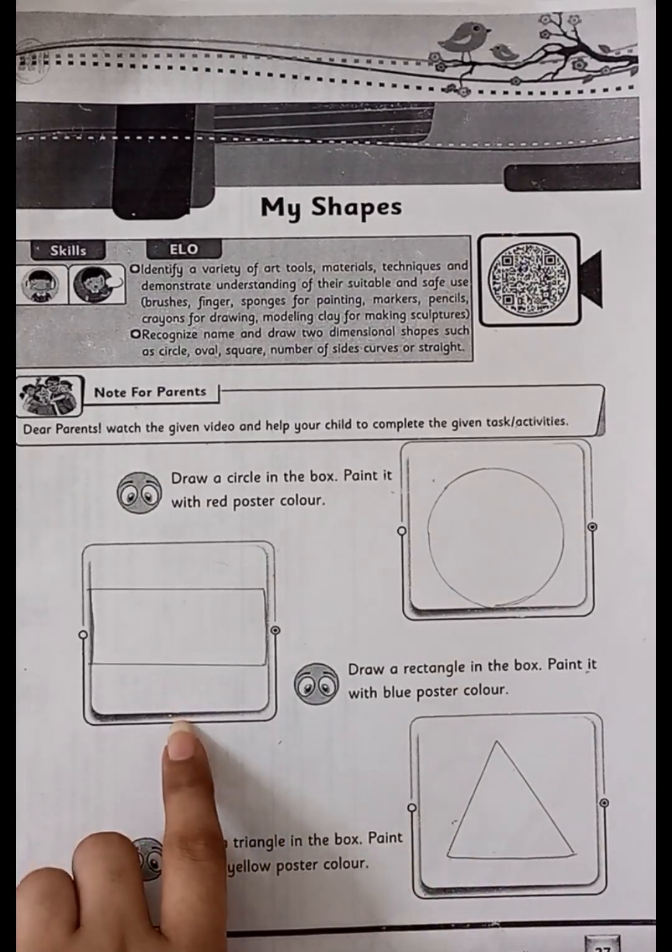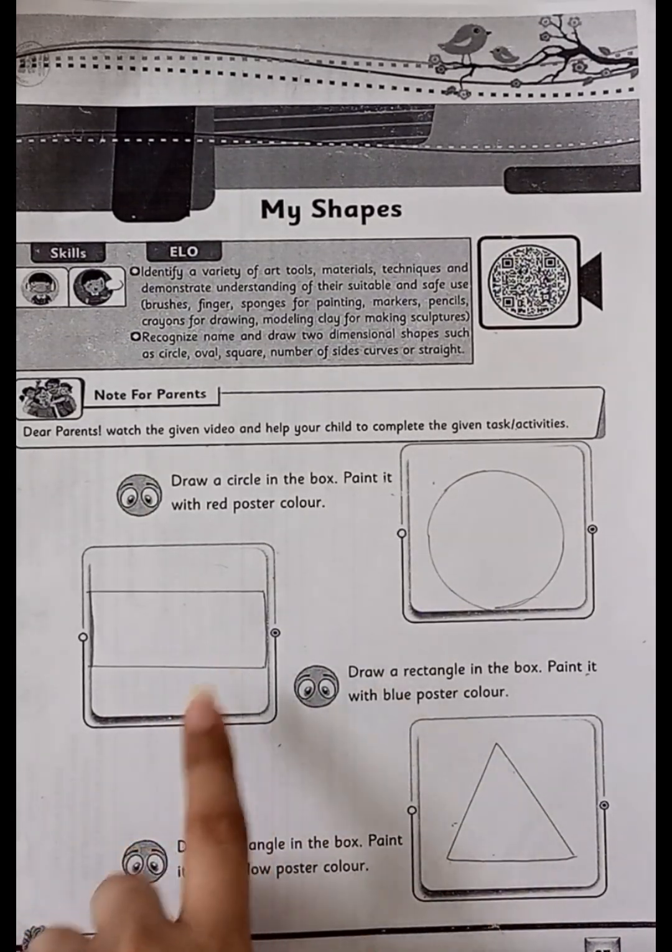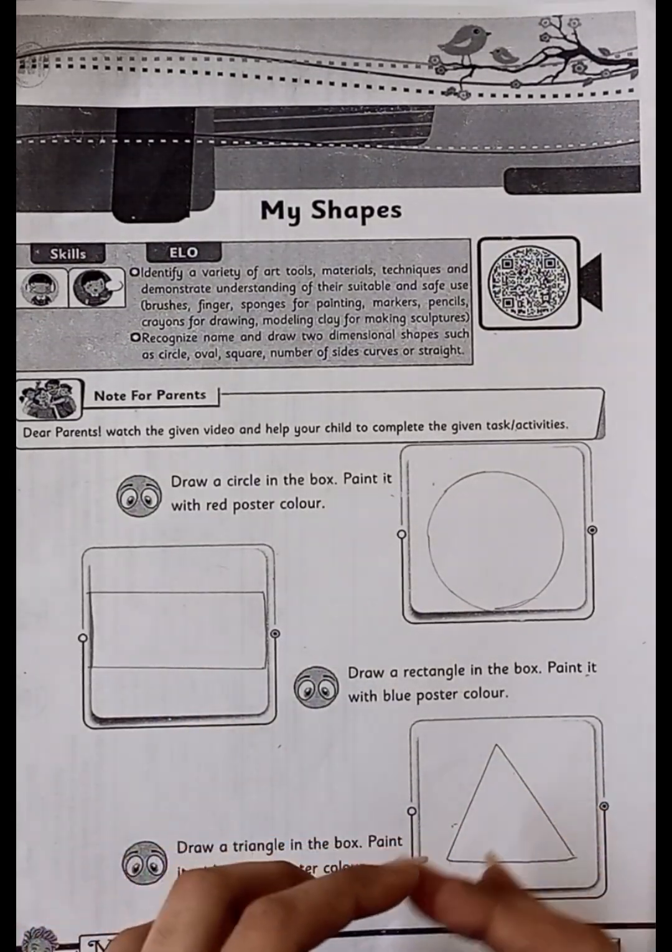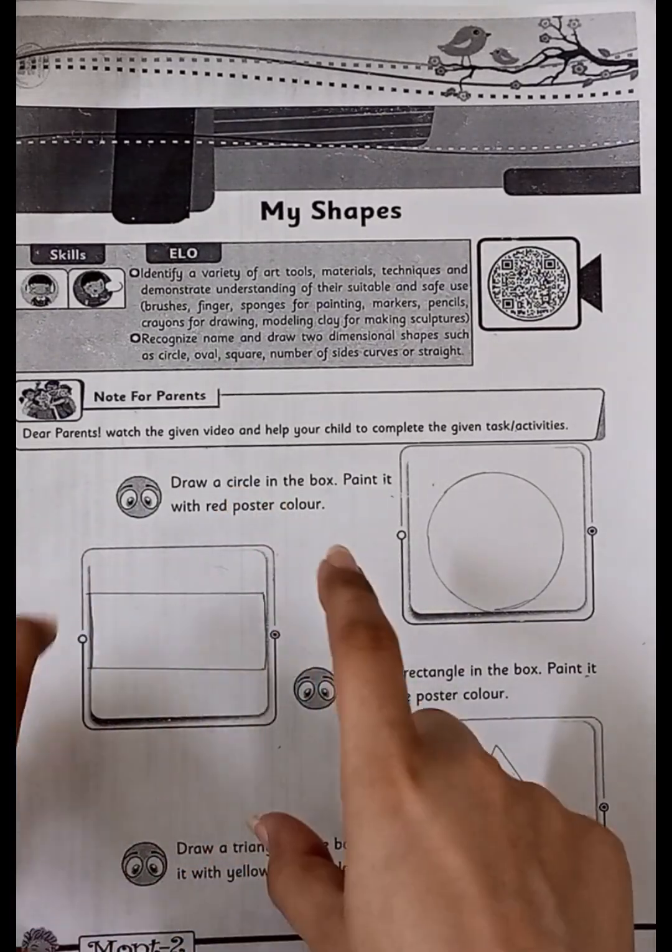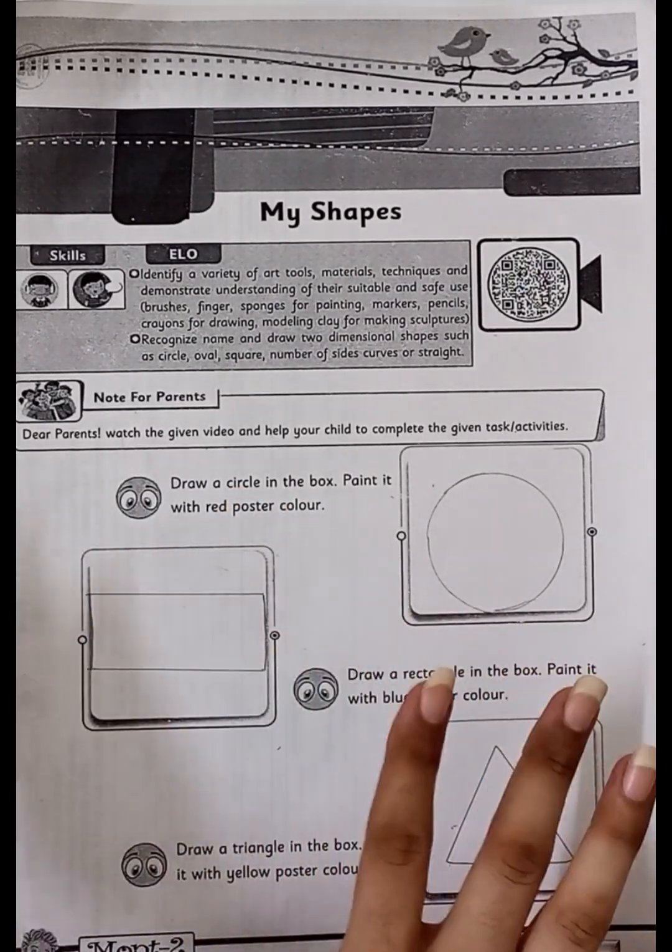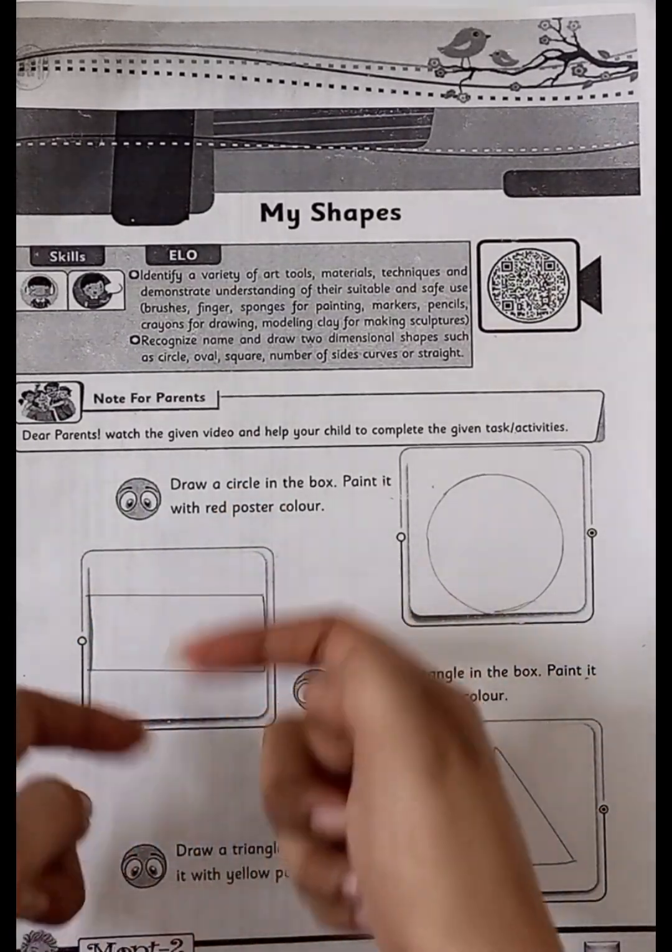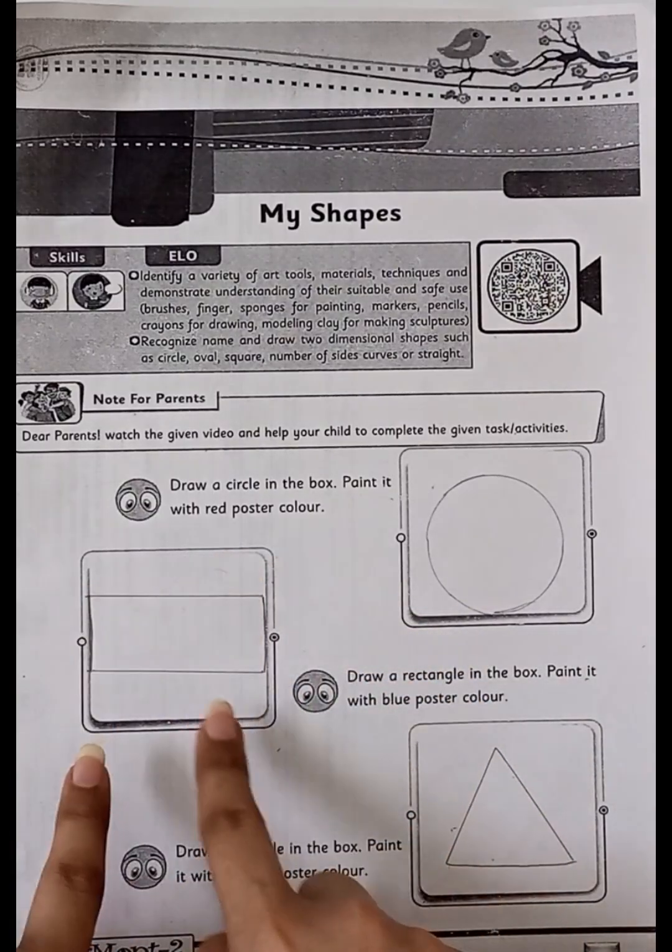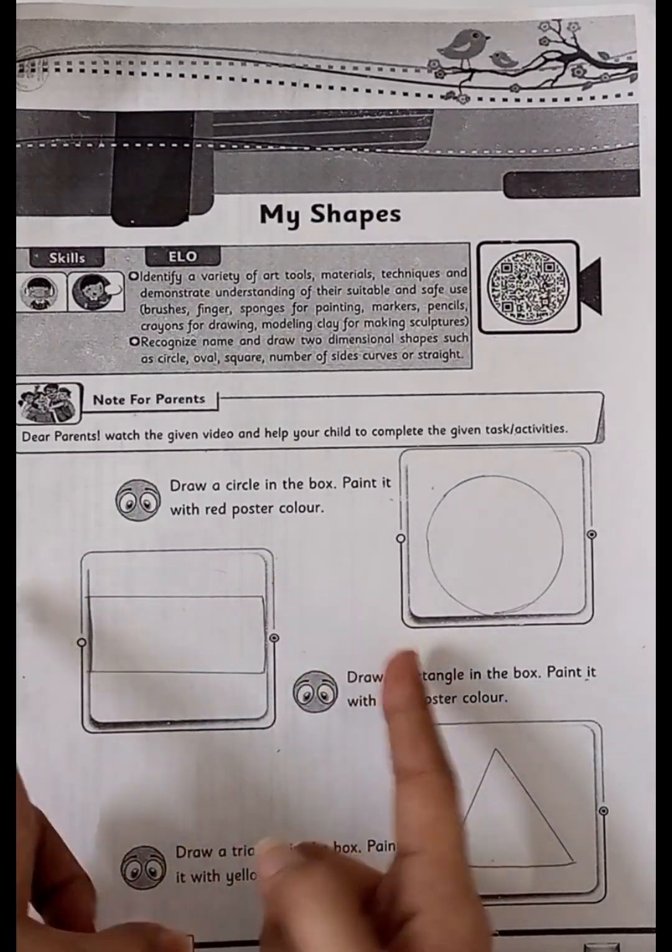This one is a rectangle. It has four sides and four different sizes. The two sides are equal size. These sides are equal size.